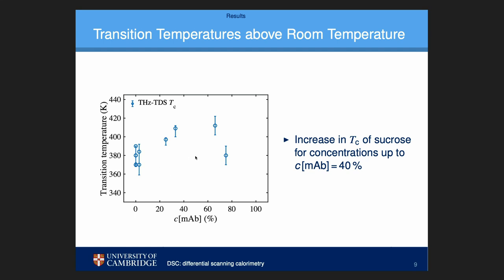If you increase the protein concentration even more — meaning you decrease the sugar concentration — crystallization becomes less apparent. We do not see any crystallization for sucrose concentrations below 25%, which explains why those points are missing.